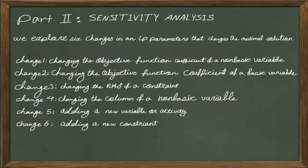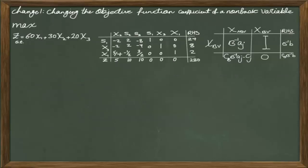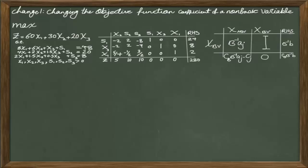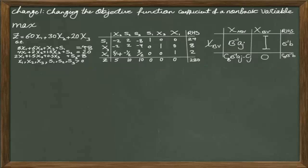Let's look at the first change: changing the objective function coefficient of a non-basic variable. In sensitivity analysis we are trying to see the impact of changing the initial problem coefficients in the final optimal table. We are usually given the initial problem statement, the optimal table, and our formulas. Our objective is to see how the final table changes when we change some of the coefficients in the initial problem.